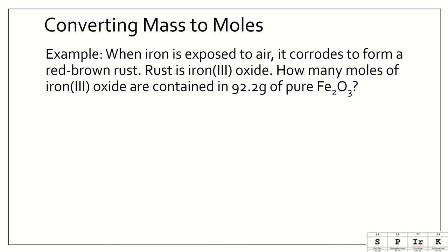Let's use that the other way. When iron is exposed to air, it corrodes to form a red-brown rust. Rust is iron-3 oxide. How many moles of iron-3 oxide are contained in 92.2 grams of pure Fe2O3? Here we're going grams to moles. Notice that to go back and forth between the two, we're going to need the molar mass. We're starting with 92.2 grams of Fe2O3, but we need the molar mass of Fe2O3. We need to take the time to add that up.